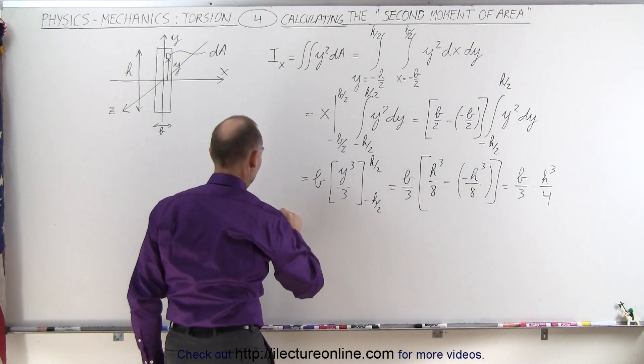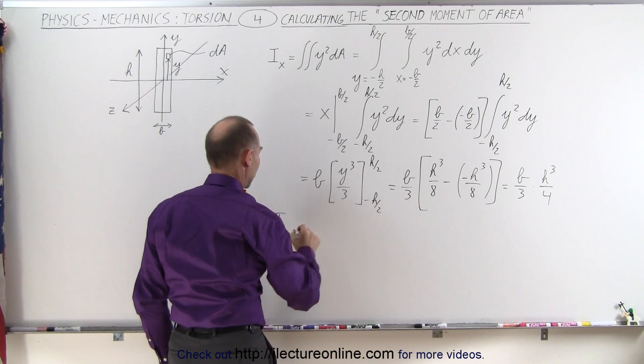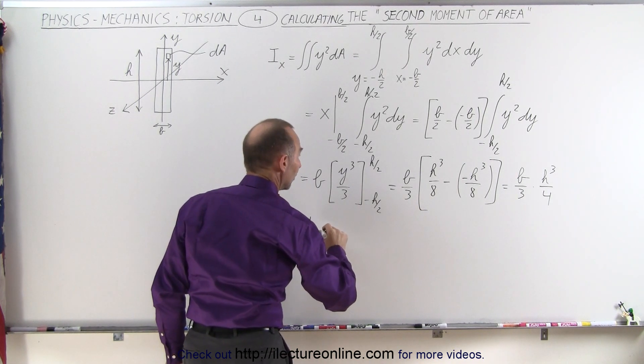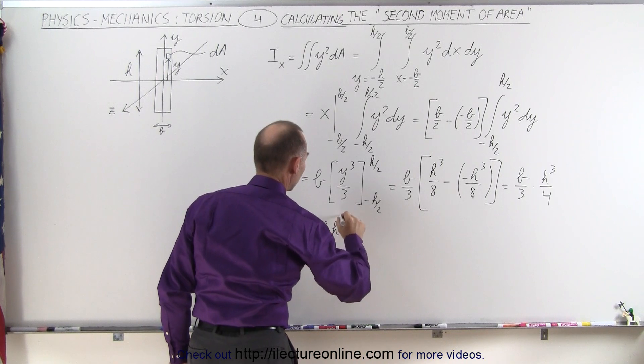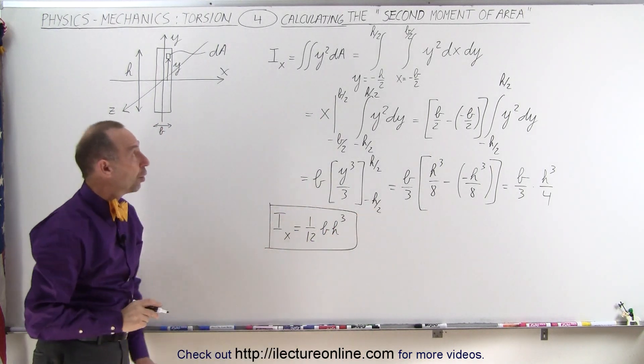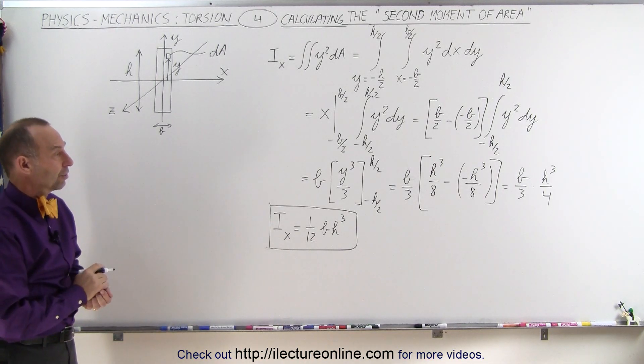So we can simplify that by saying that I, relative to the x-axis, is equal to 1 twelfth b h-cubed. So that's what we call the second moment of area, relative to the x-axis.